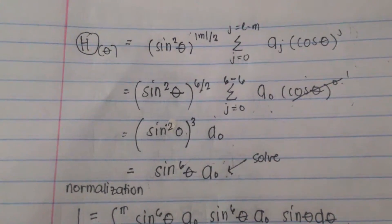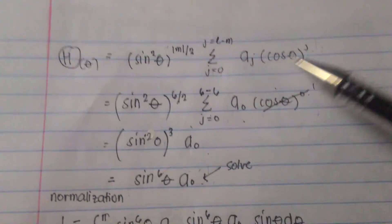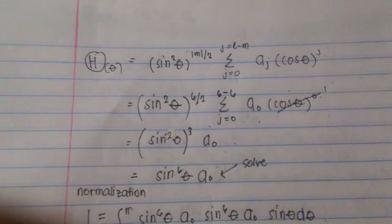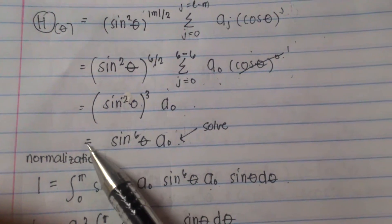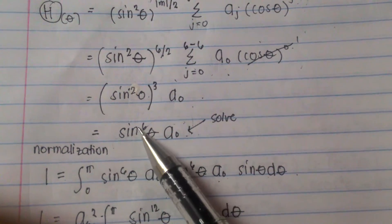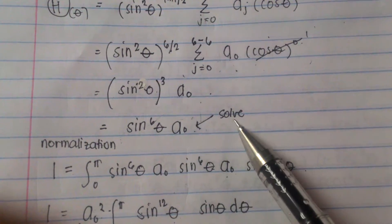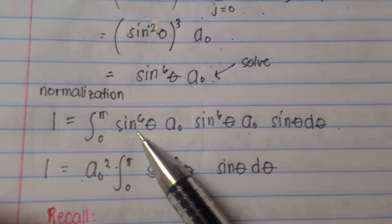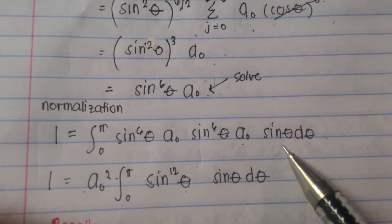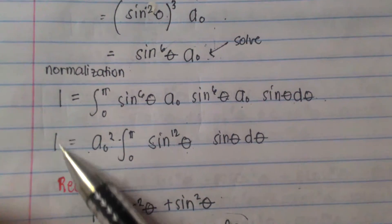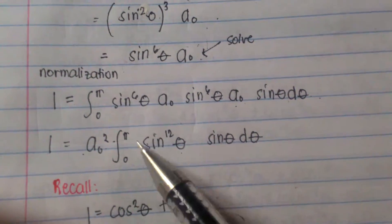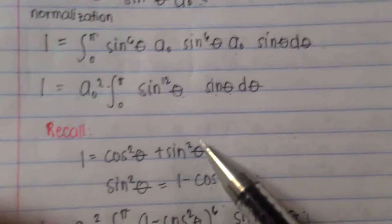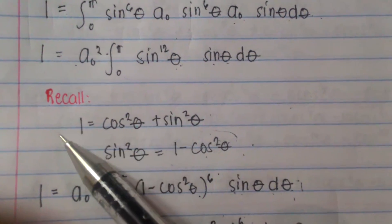We can now solve for theta. This is the formula for theta. Substituting all the values, we get sin squared theta raised to 3, times a₀. The equation we get is sin theta raised to 6 times a₀. We can solve for a₀ via normalization. 1 equals the integral of sin raised to 6 theta times a₀, squared, times sin theta d theta. We can use trigonometric identities here, where sin squared theta equals 1 minus cos squared theta.